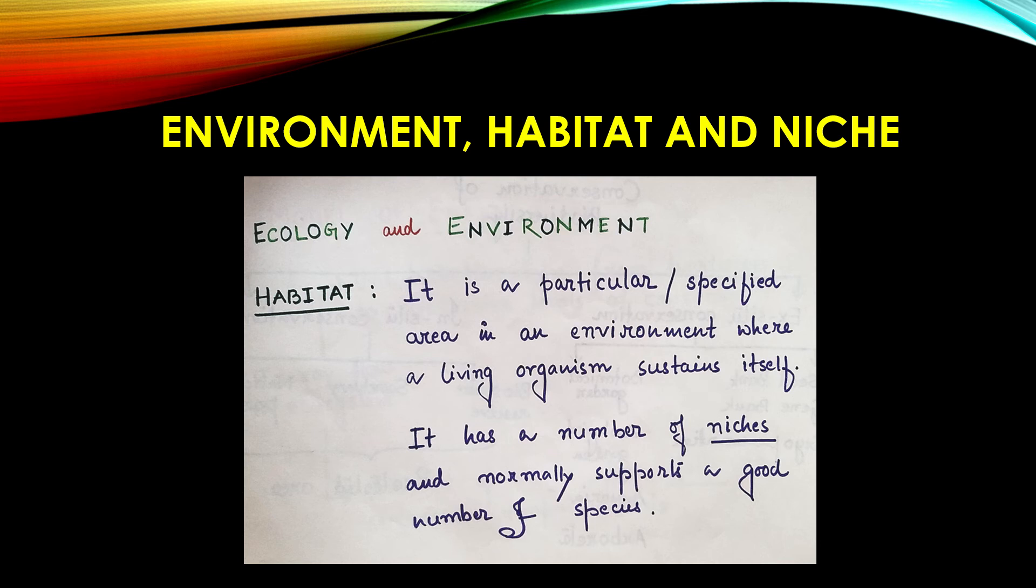It is a particular or specified area in an environment where a living organism sustains its life. This is habitat. So habitat is a part of the environment. Environment is the entire surrounding and habitat is a specified part over there. It is a particular location where the living organism is sustaining its life. It has a number of niches and normally supports a good number of species.